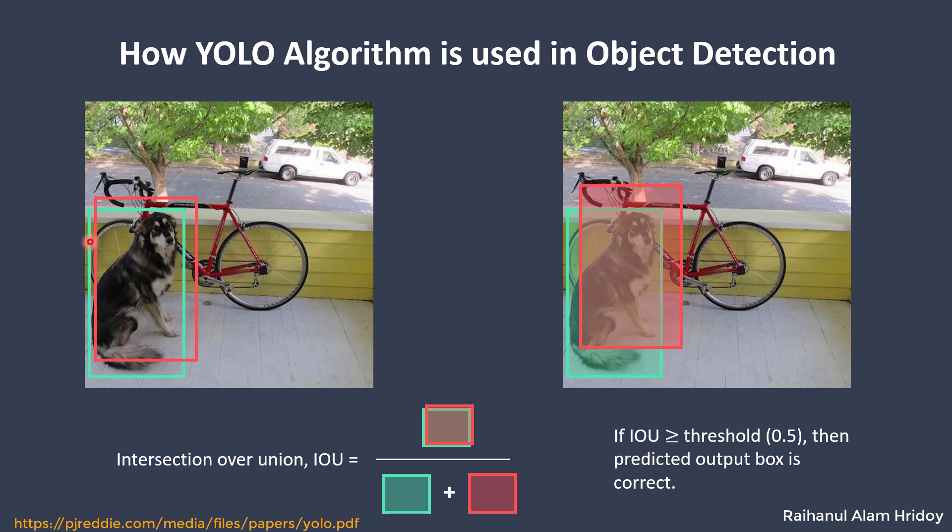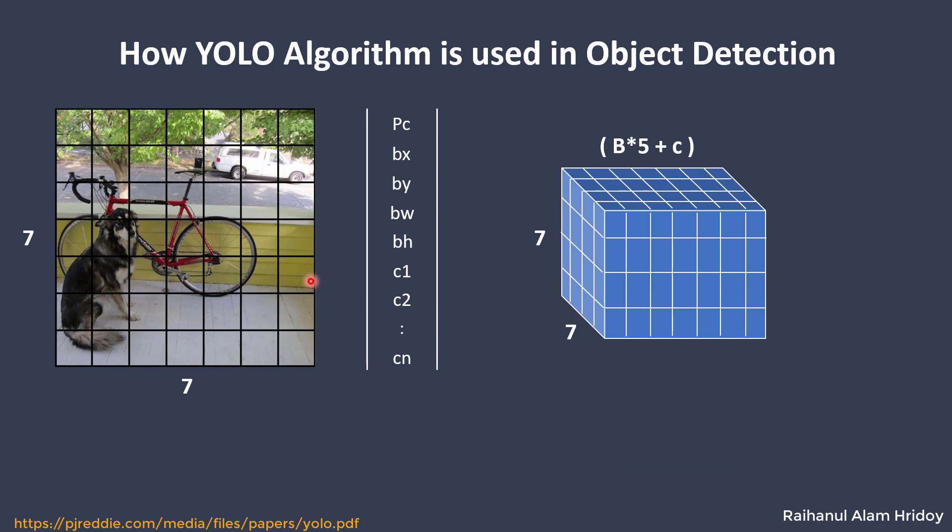We can calculate IOU using this formula where we use the intersection part in the numerator and the sum of the total area in the denominator. Now if the IOU of the red square is greater than or equal to 0.5, we keep this red box as correct. This is how we prove the correctness of the algorithm.